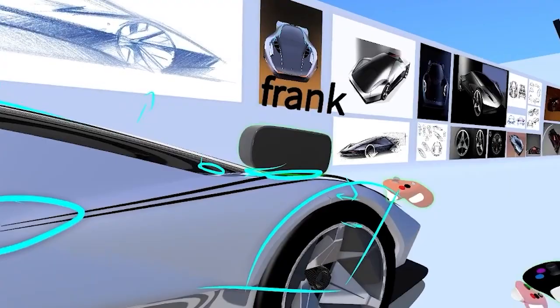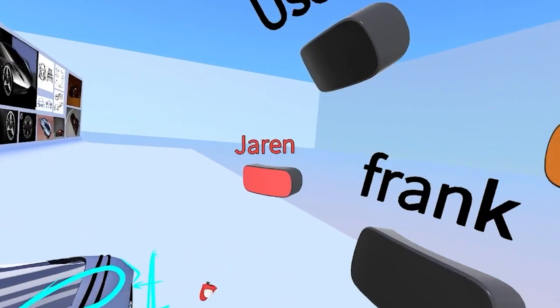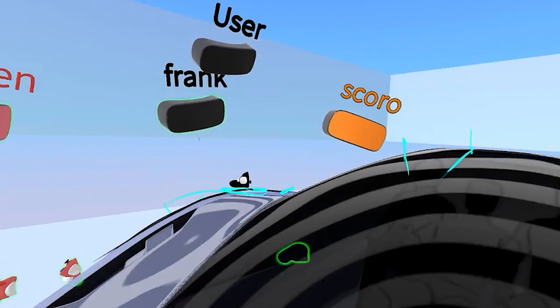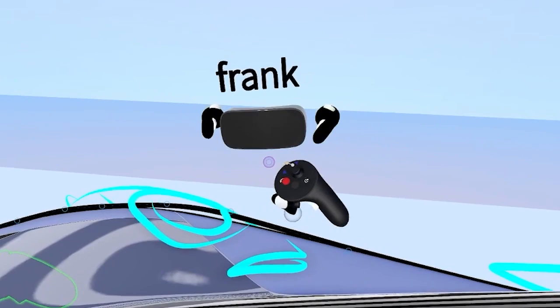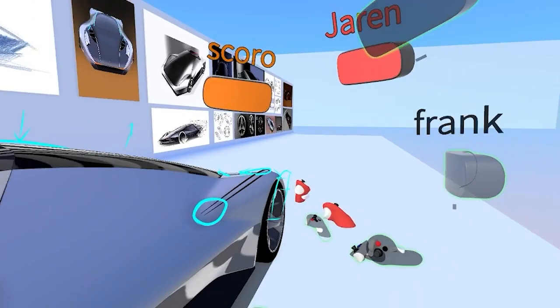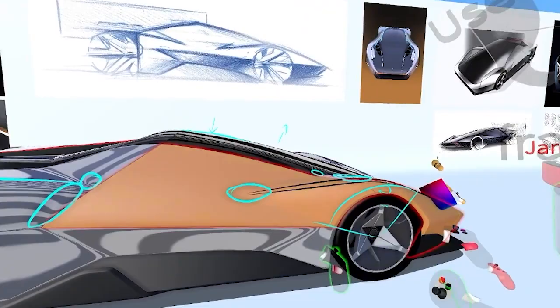Let's say this model was built in alias and we imported it into Gravity Sketch just for review. We can do that. And then we can draw all the lines that we want, and then we can export those lines as curves back to the alias sculptor. So now they have exact direction to work to.